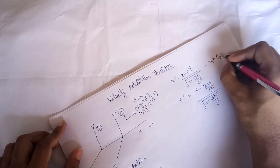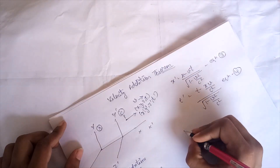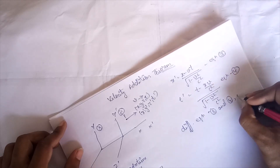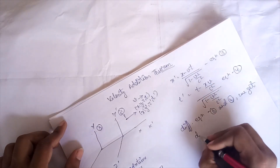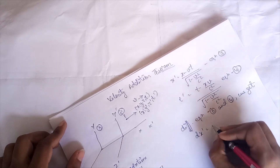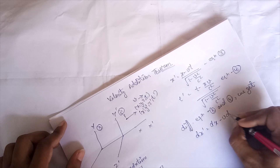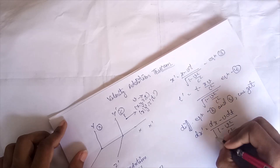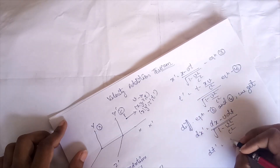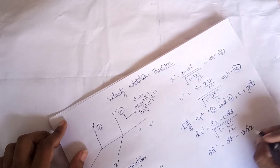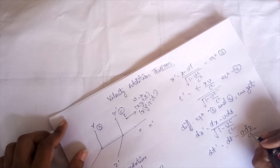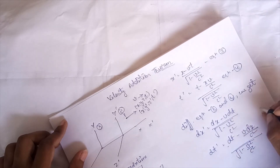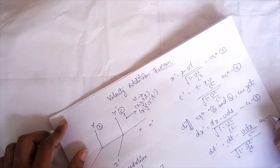Now differentiating equations 3 and 4 we get: dx-dash = (dx − v·dt) / √(1 − v²/c²)  — equation 5 — and dt-dash = (dt − v·dx/c²) / √(1 − v²/c²)  — equation 6.